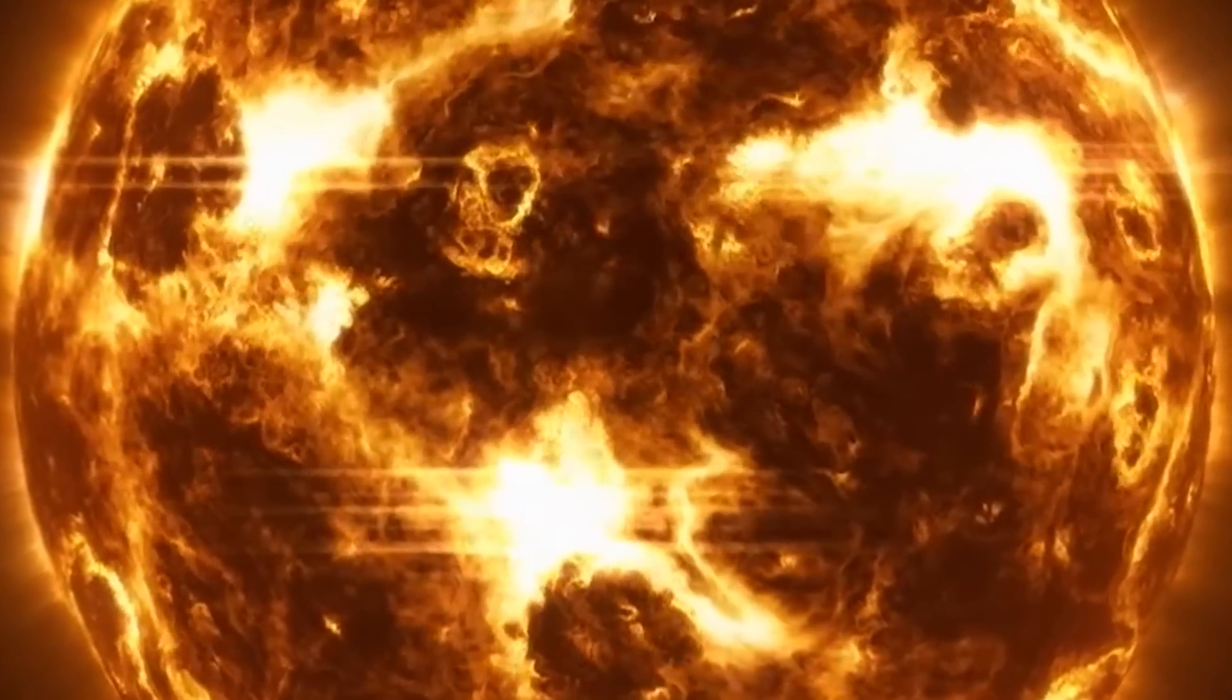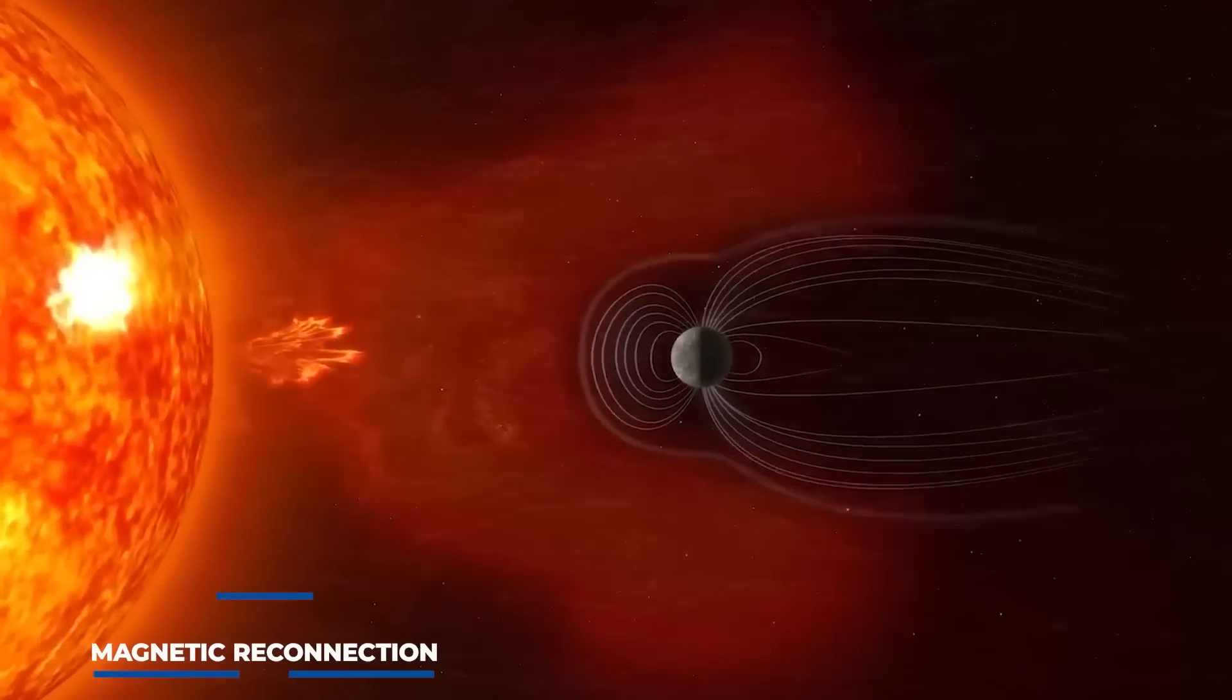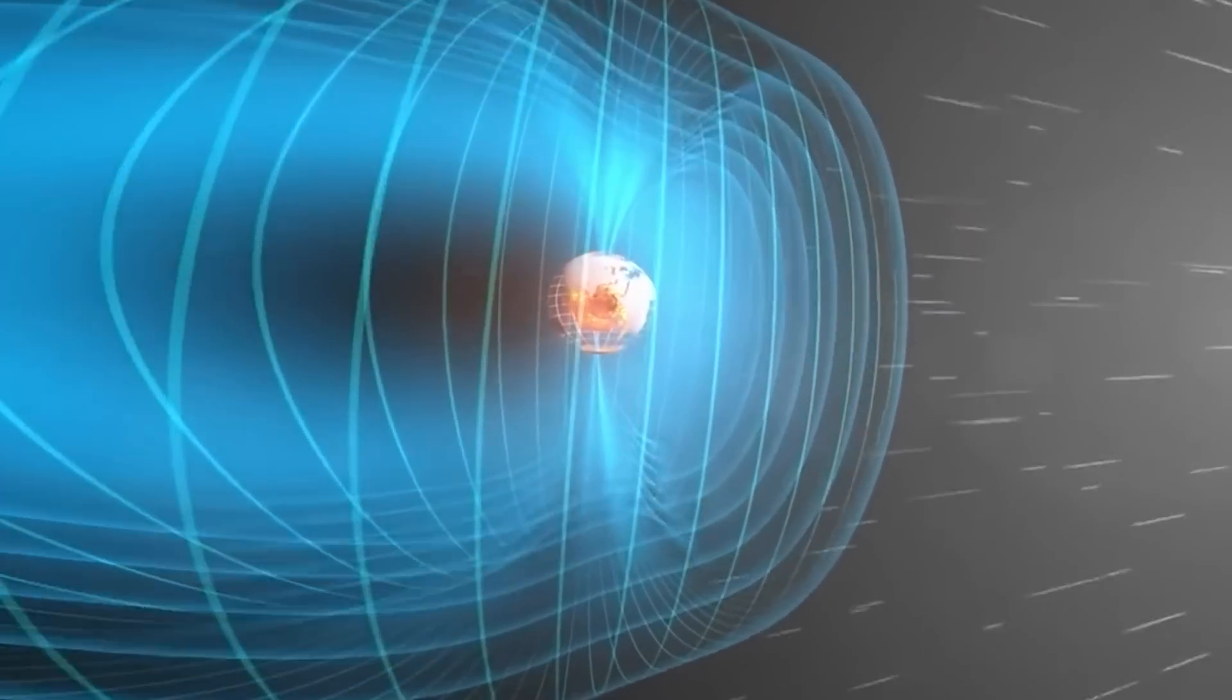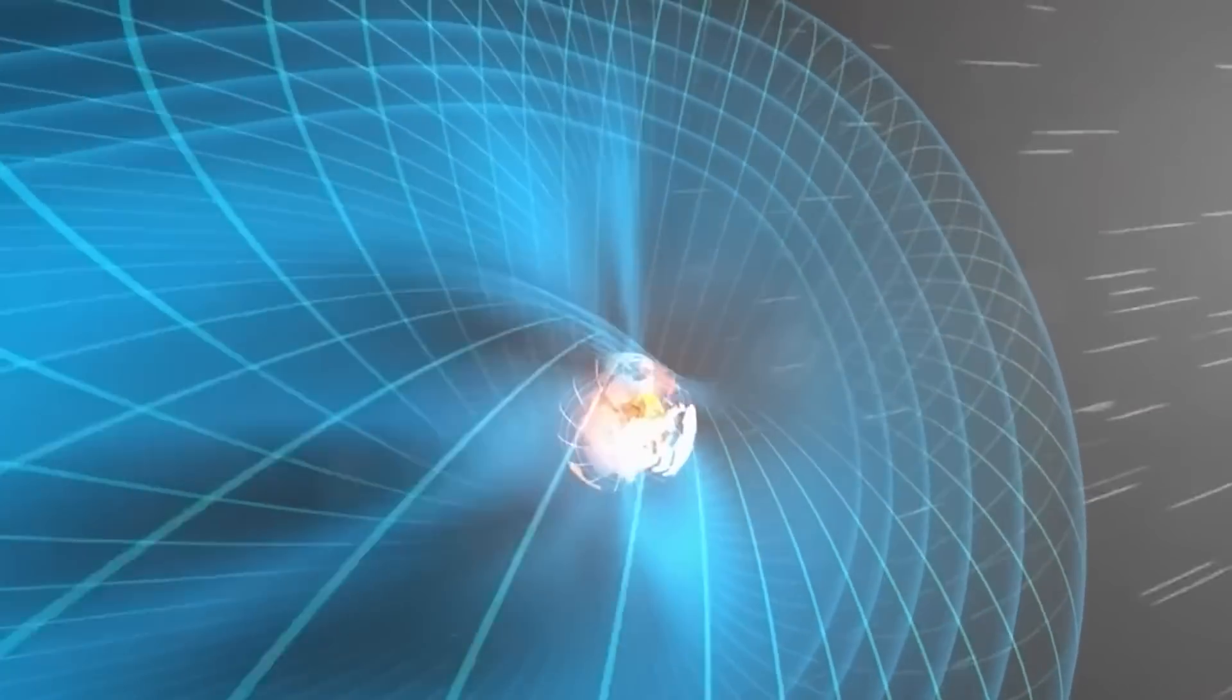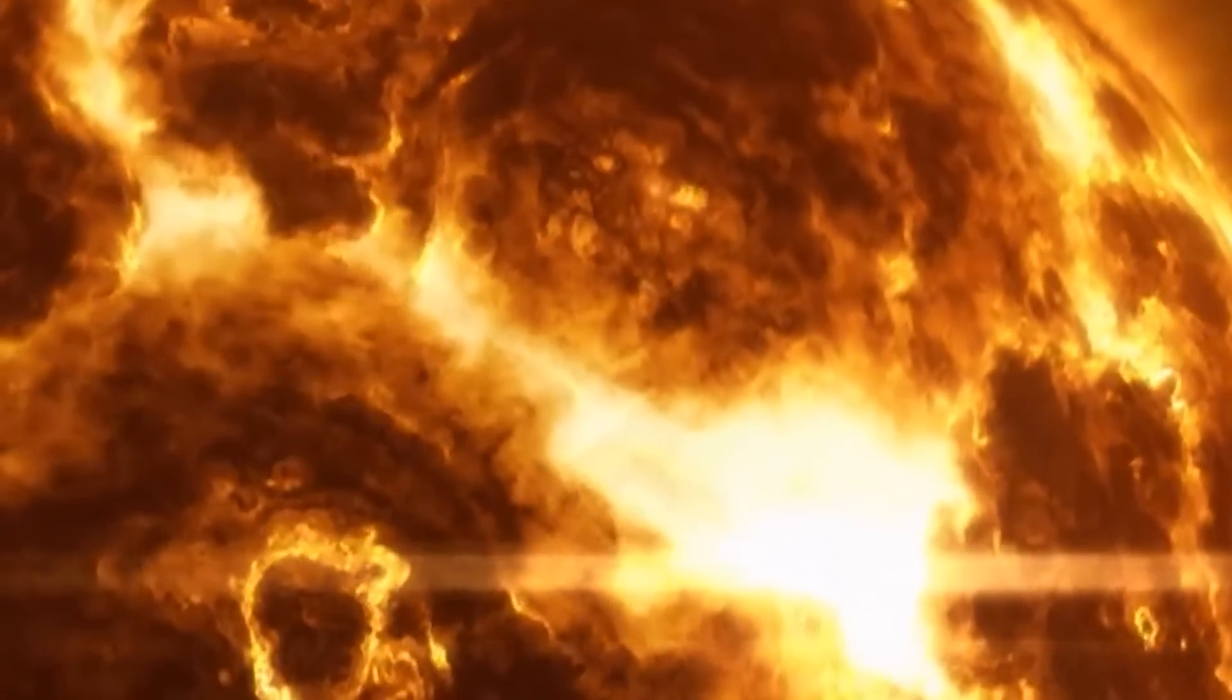Coronal mass ejections are caused by the twisting and realignment of the Sun's magnetic field, a process known as magnetic reconnection. Strong localized magnetic fields can develop when magnetic field lines tangle, resulting in CMEs breaking through the Sun's surface at active regions.